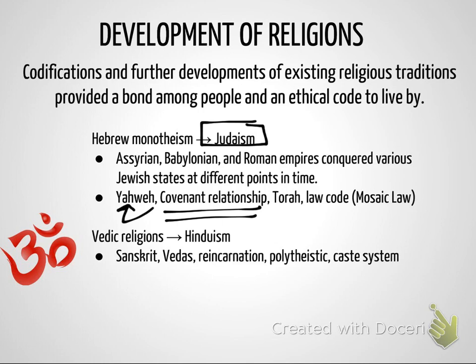Judaism has lots of different traditions, and it will come back as we start talking about both Christianity and Islam later on. Another religion that develops is the Vedic religion based on the Vedas, written in Sanskrit, which will develop fully from Vedic practice and the Brahmins ultimately into Hinduism.